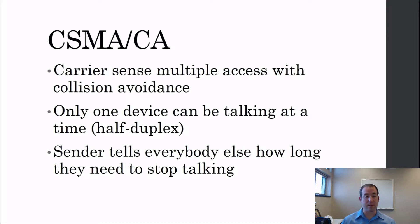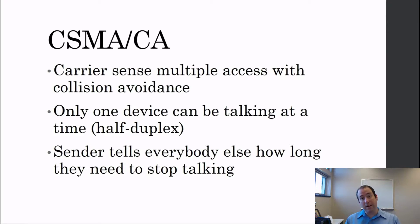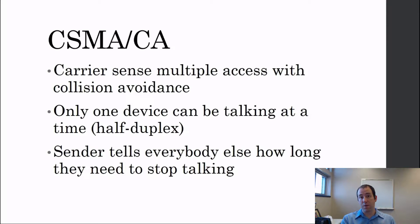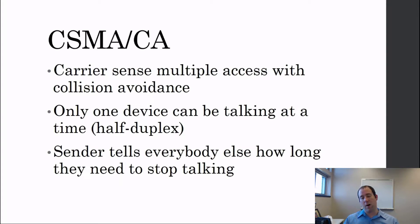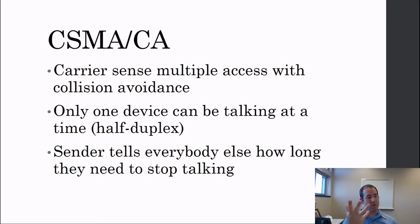WiFi radios are half-duplex — they can send and receive, but only one at a time. So they can't detect collisions, because if transmitting and potentially creating a collision, they cannot simultaneously be listening to know a collision is happening. We use collision avoidance instead. One method is that when you start transmitting, you announce to everybody how long you're going to be transmitting for — and that's only for a single frame. You send one frame, then wait your turn again.